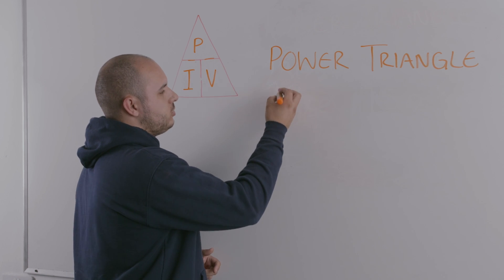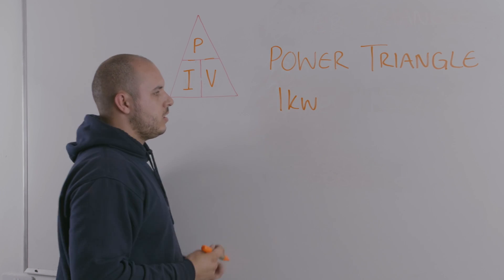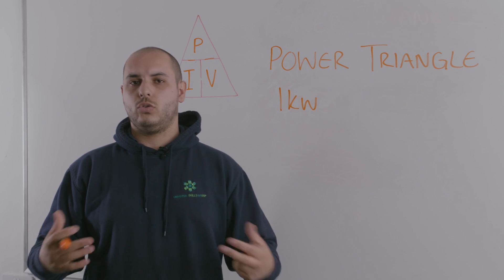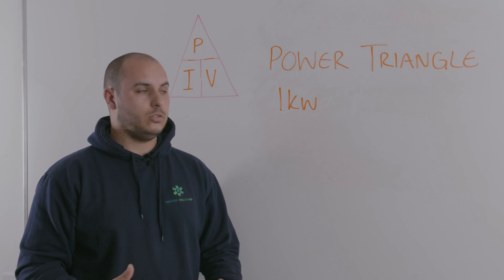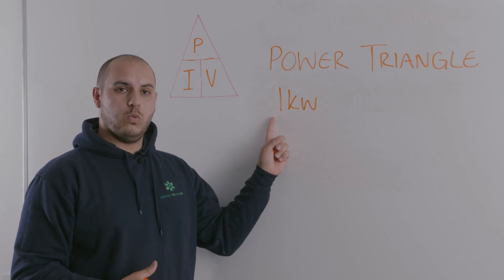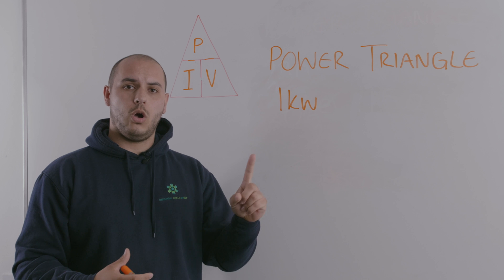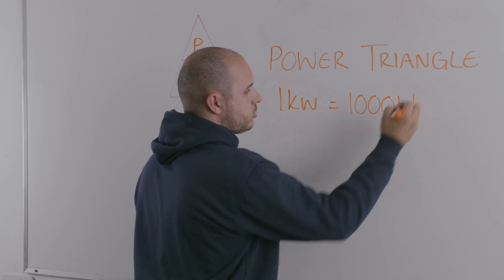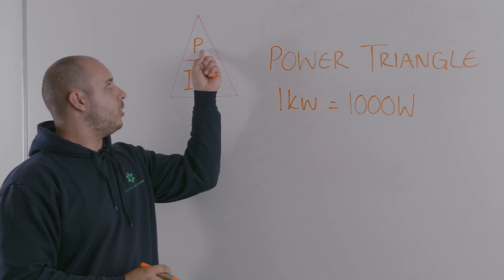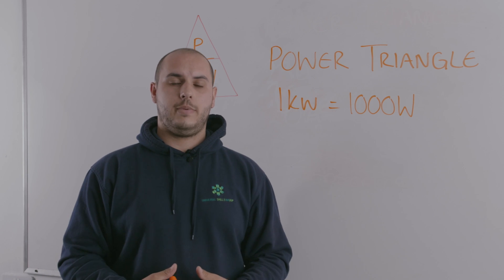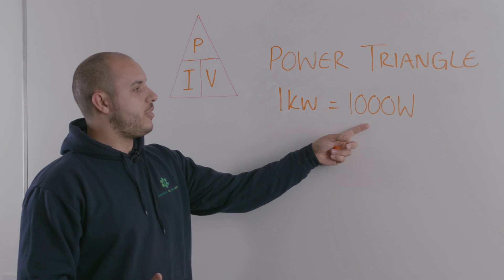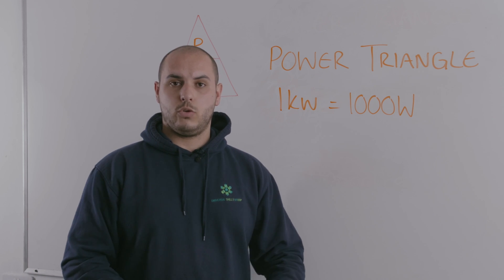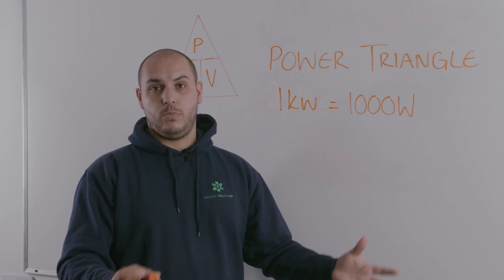To show you that — what we would have is one kilowatt. The number one wouldn't be able to be put straight into that triangle, because if you put that in there, you're not going to get anything of much value when you divide it by anything on the triangle. So what you need to do first is convert it into watts. One kilowatt is always equal to 1,000 watts, and that is the value you need to put in the top of the triangle. When we talk about power, we're talking about the power consumption in watts.